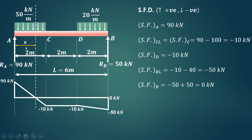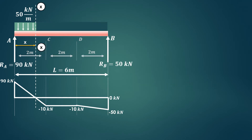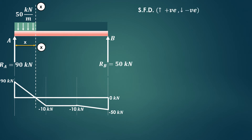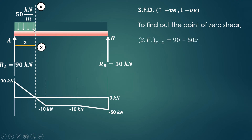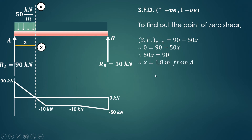Consider a section XX at a distance x from the left hand support A, within the 50 kilonewton per meter UDL region. On the left hand side of section XX, the forces are RA (upward, positive) and 50 times x (downward, negative). Setting shear force equal to zero: 90 minus 50x equals zero. Solving gives x equals 90 divided by 50, which is 1.8 meters from A.